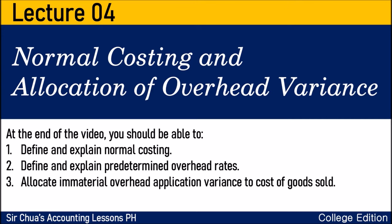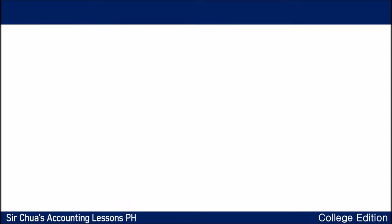We are still at Cost Accounting and Control. At the end of the video, you should be able to define and explain normal costing, define and explain predetermined overhead rates, and allocate immaterial overhead application variants to cost of goods sold.